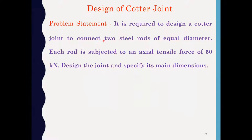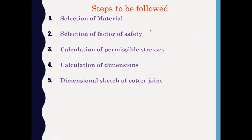This is the problem statement. We have to design a cotter joint to connect two steel rods of equal diameter. Each rod is subjected to an axial tensile force of 50 kilo Newtons. Design the joint and specify its dimensions. The five steps to be followed are: selection of material, selection of factor of safety, calculation of permissible stresses, calculation of dimensions, and dimensional sketch of the cotter joint.